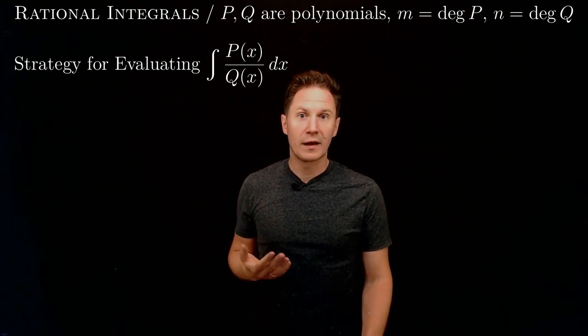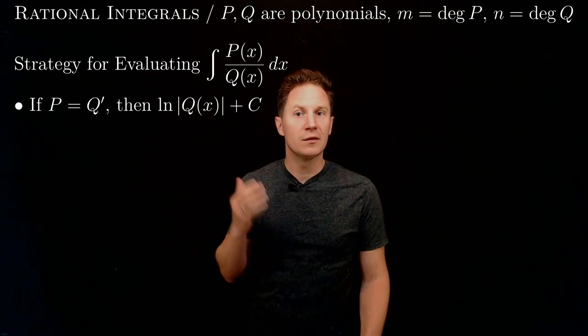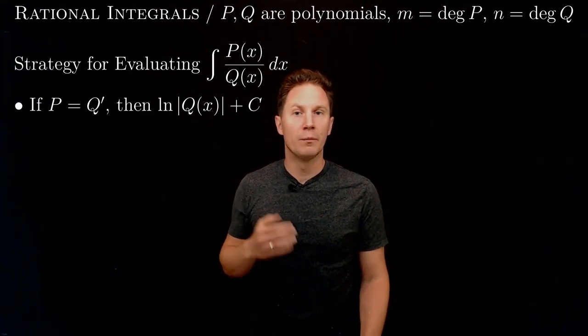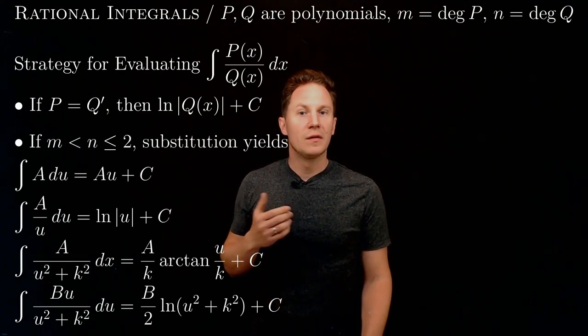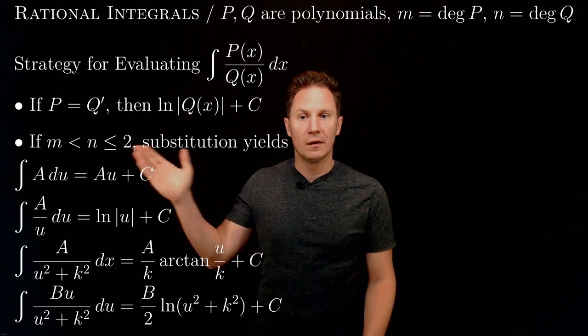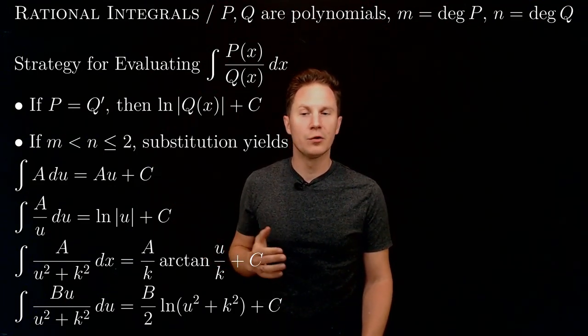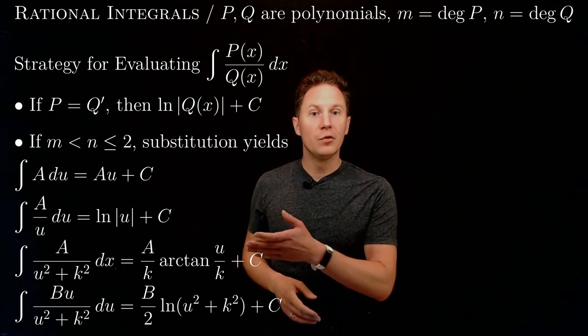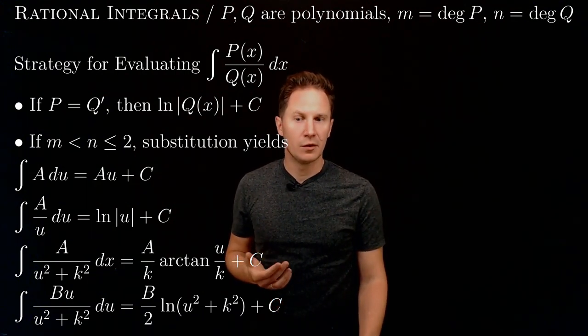So there are several cases to consider. First, if P happens to be the derivative of Q, then the integral is simply the natural log of mod Q plus C. If the degrees are small enough in this way, so m is less than n which is less than or equal to 2, then using an appropriate substitution we can end up with one of these four simple integrals.